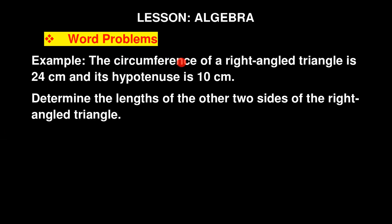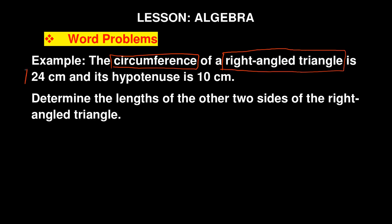The keywords there are circumference and right angle triangle. We are told the circumference is 24 centimeters — that value is important — and its hypotenuse is 10 centimeters. All this is important information. The question says: determine the length of the other two sides of this right angle triangle.